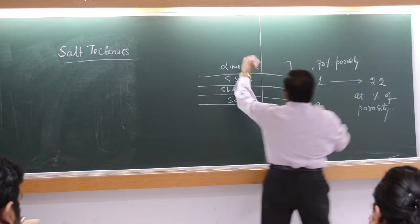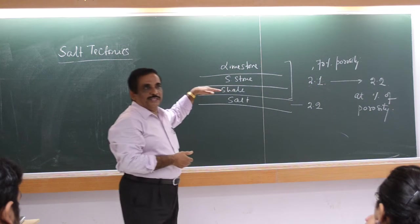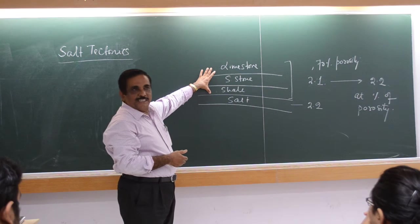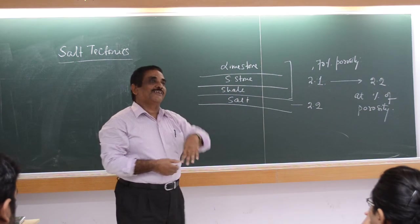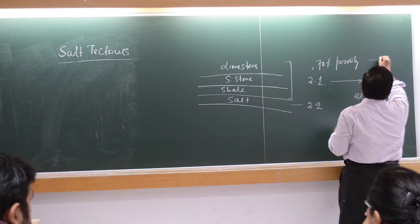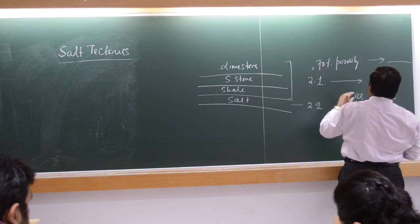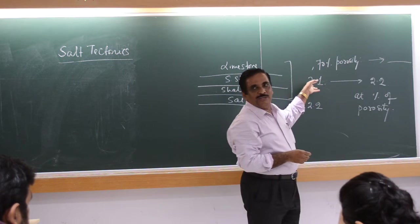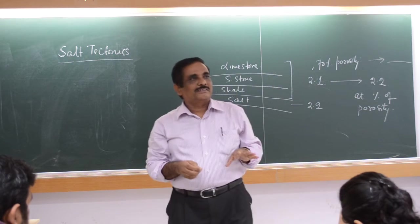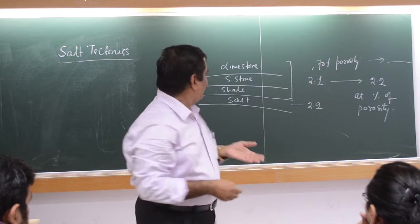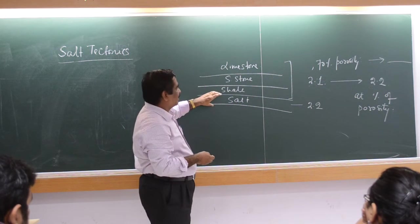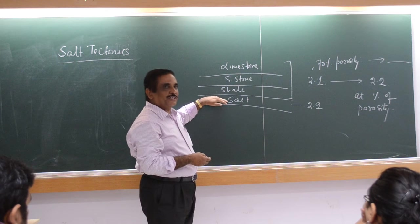As it is buried, the porosity of this unit reduces. So, at what level — from 70 percent, to what extent it should go — so that this 2.1 value will become 2.2 or more? Then only this porosity is now heavier, so it is occurring at the bottom.